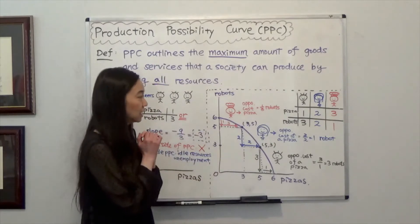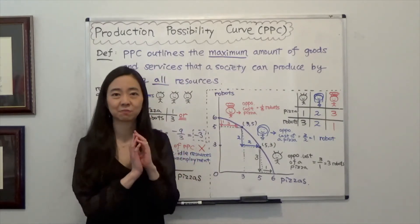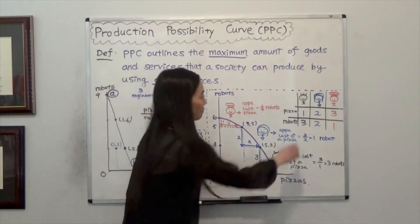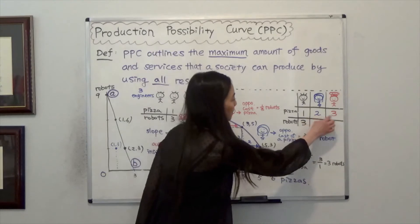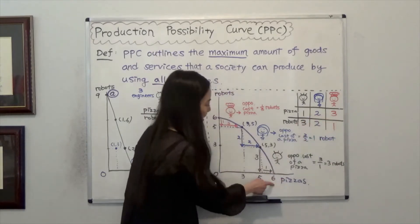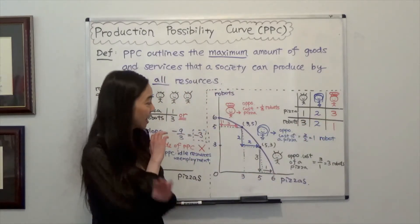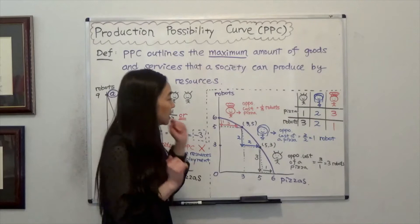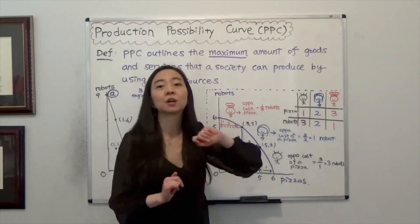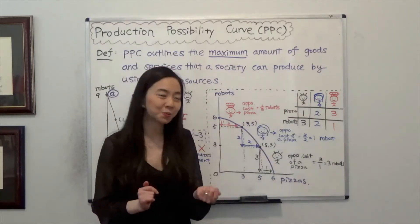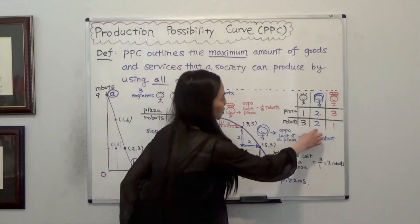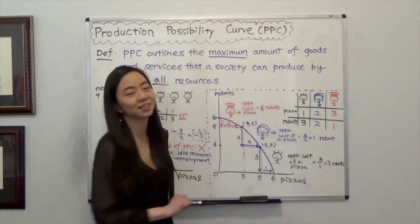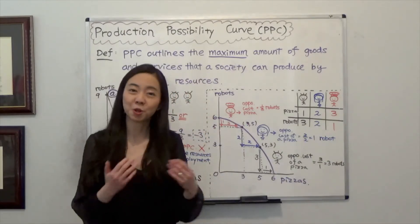If all workers make pizza, we can have 1 plus 2 plus 3 — 6 pizzas and no robots. If all 3 workers are only making robots, we can have 3 plus 2 plus 1 — 6 robots but no pizza.